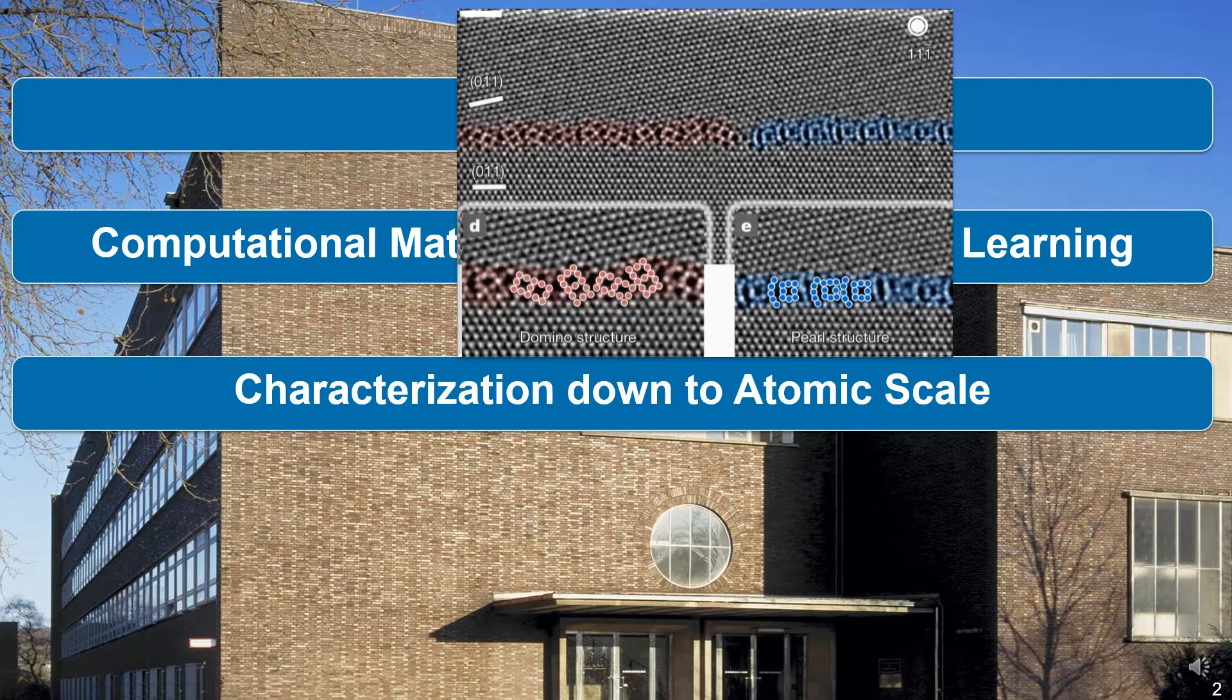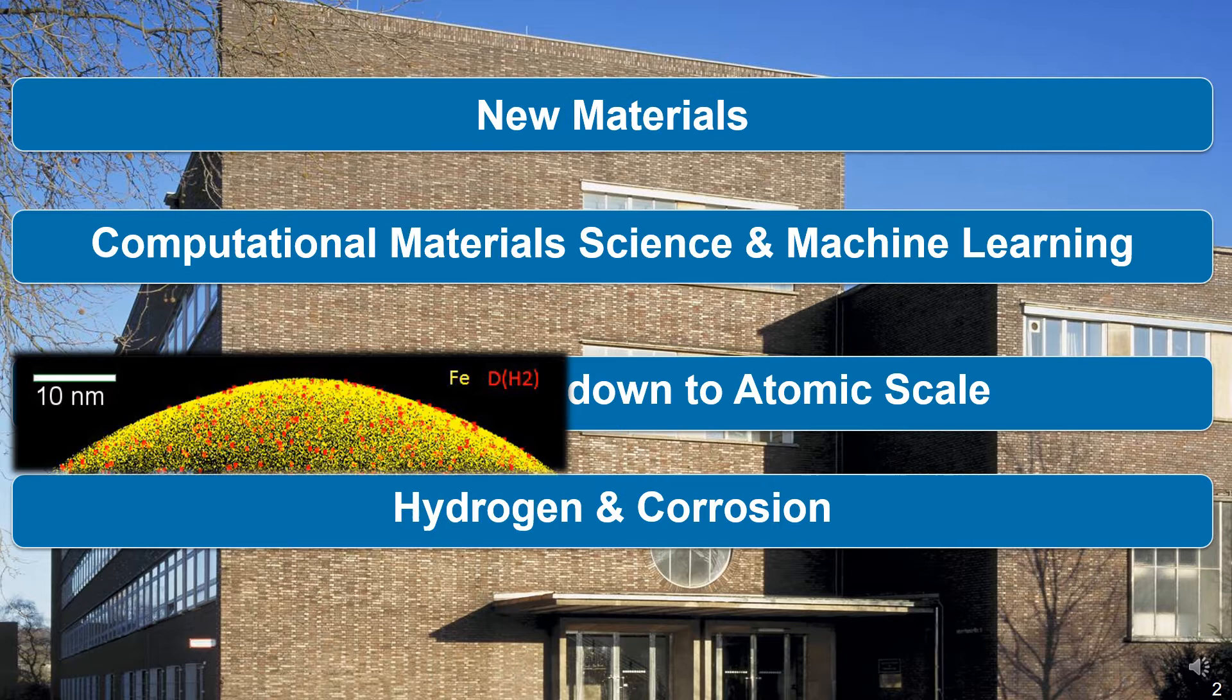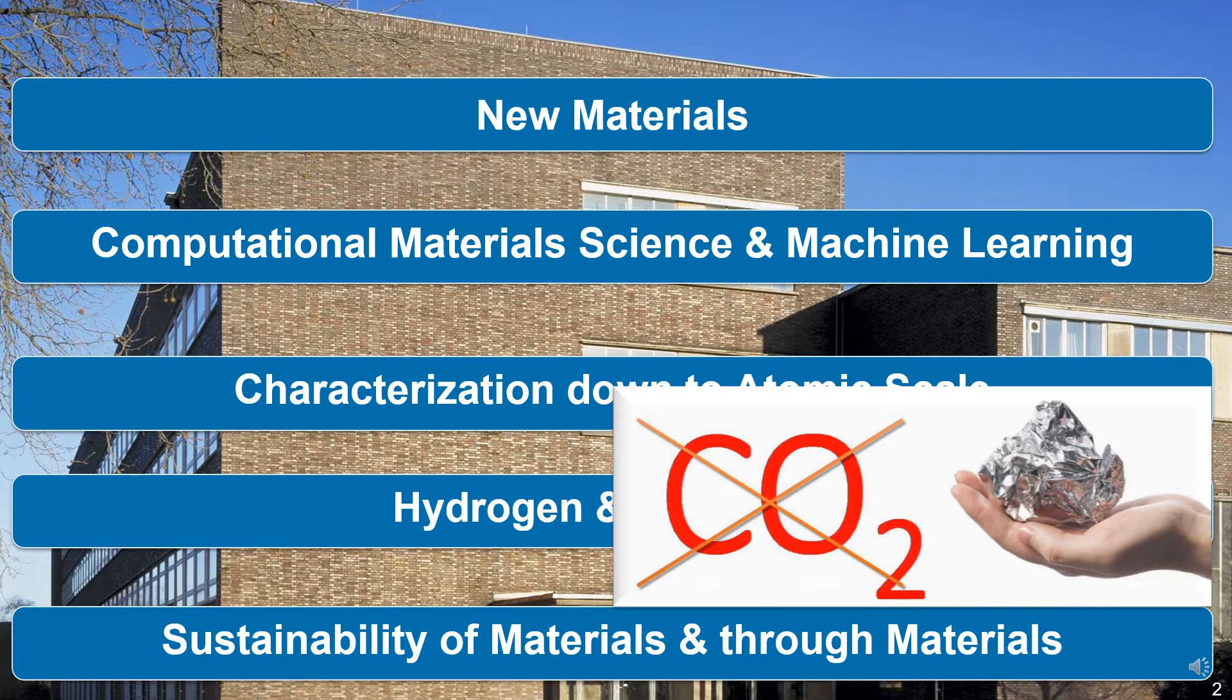And we have growing interest in the fields of hydrogen embrittlement and hydrogen related materials behavior as well as corrosion. Here you see an example where we measure individual hydrogen atoms in materials. A rapidly emerging field is the sustainability of materials and sustainability through the use of advanced materials.